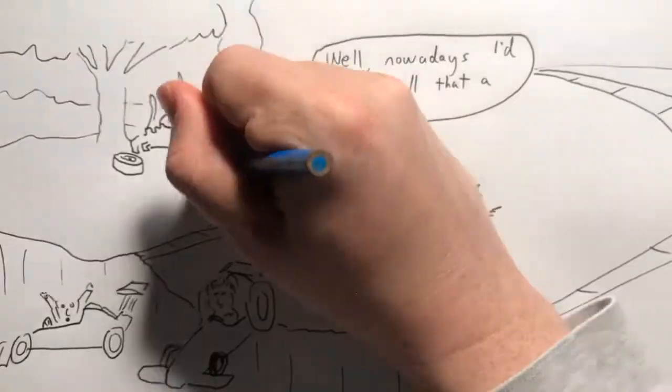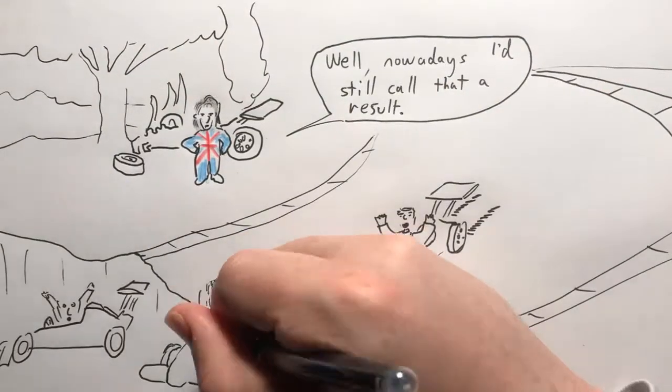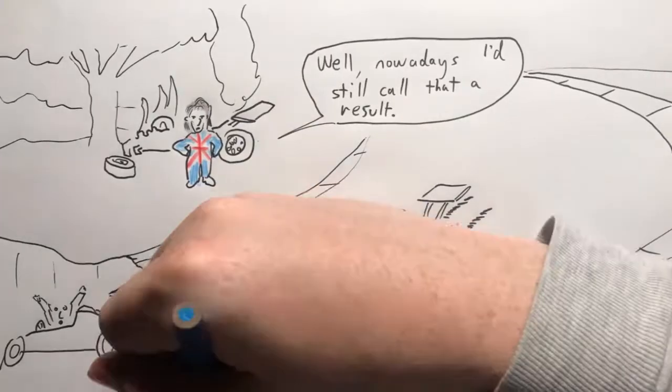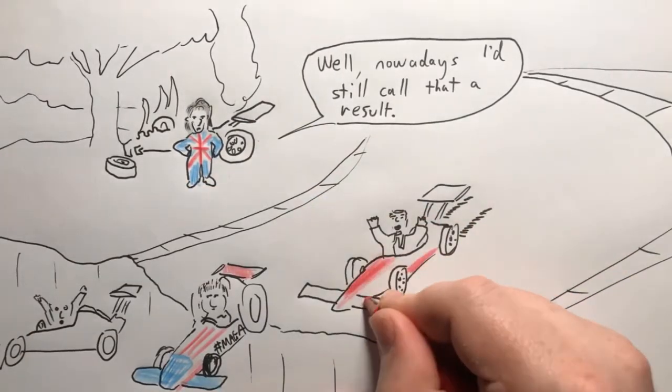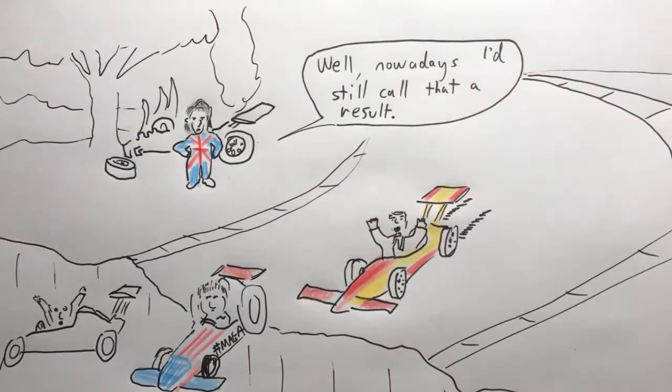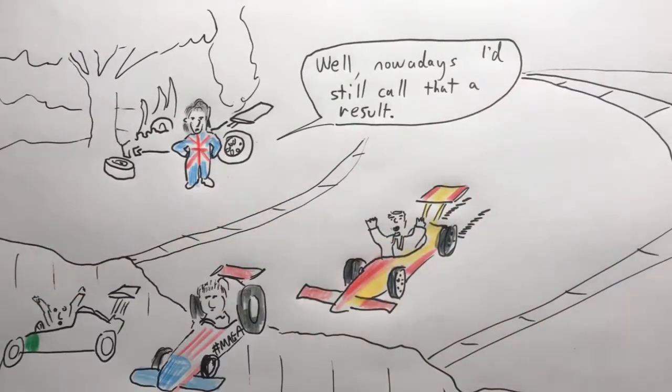In Italy, they've got new leadership this week after the Five-Star Movement and the League, who were the winners in Italy's recent general election, finally succeeded in their second attempt at putting together a coalition government, which, as readers in the UK of course know, always works out really well.